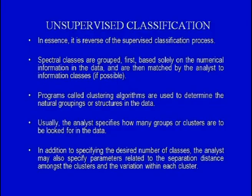Now let us look at unsupervised classification. In essence, it is the reverse of supervised classification. Spectral classes are grouped first based solely on the numerical information in the data and are then matched by the analyst to information classes as far as possible. Programs called clustering algorithms are used to determine the natural groupings or structures in the data.